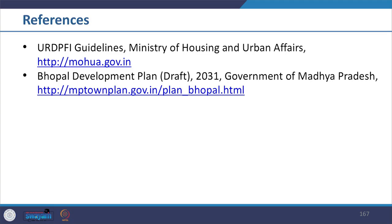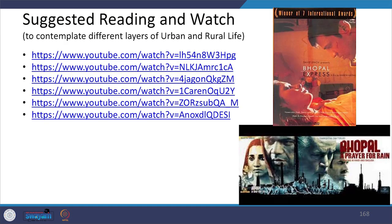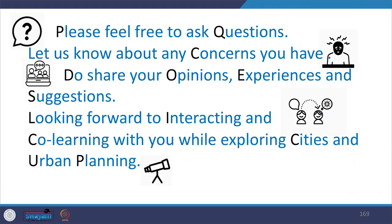Summarizing, today we have seen what is the intent of the vision and how the vision is developed for the development plan. We also saw the content of the development proposal — from problems identified to land use and different zones classified, with details from transportation to housing, solid waste, and all services included. We saw this through the case example of the Bhopal Development Plan and the range of maps prepared. The development plan is a statutory document that guides day-to-day decision-making so that everyday actions align with larger goals, showing how through such proposals and documents we align to the entire development of the city. These were the references used; coverage was limited to make you aware of the topic, and you may feel free to ask questions, share opinions, experiences, and suggestions. Looking forward to interacting and co-learning while exploring cities and urban planning.